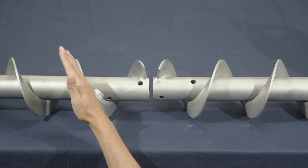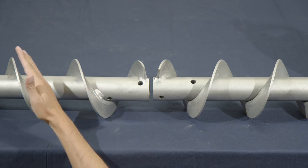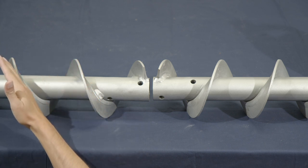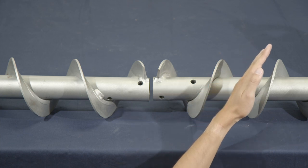Looking at the screw from the side, if the flights angle from the top side down to the right, it is right hand. Flights angling down to the left is left hand.